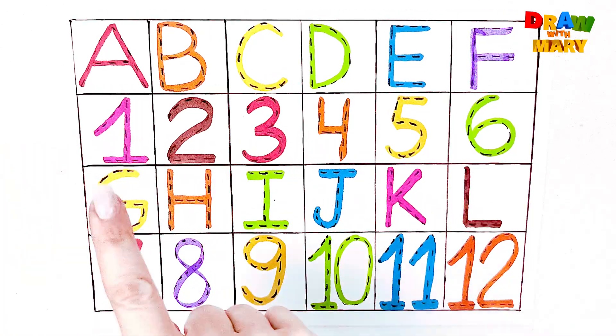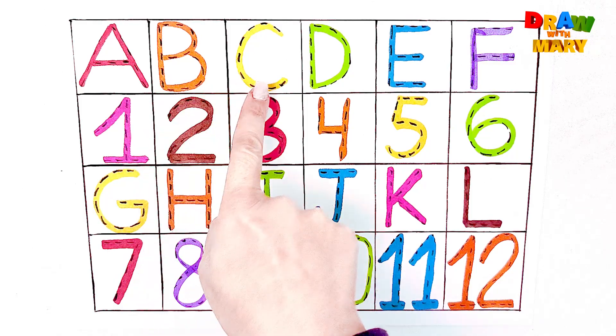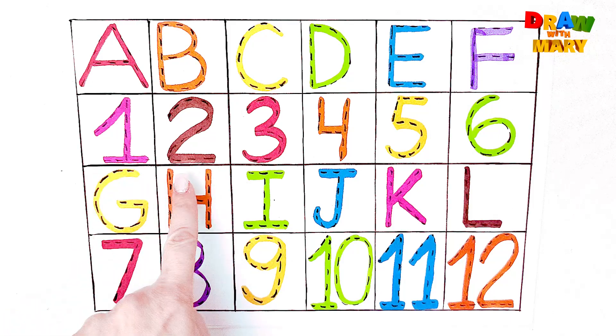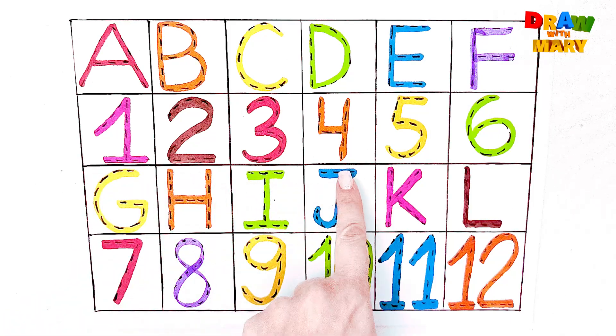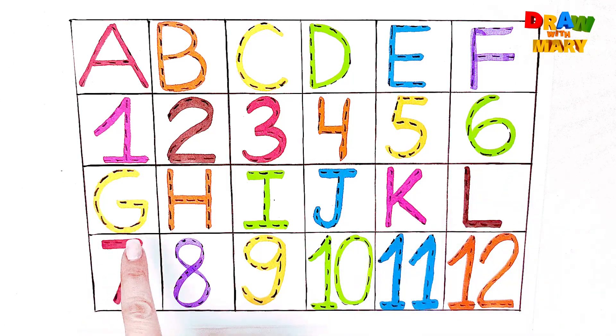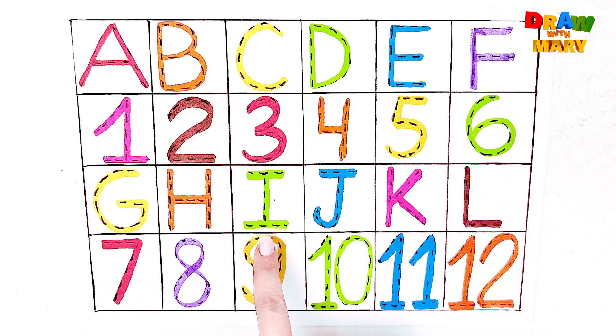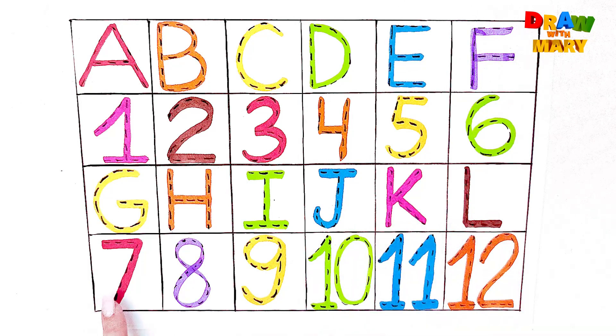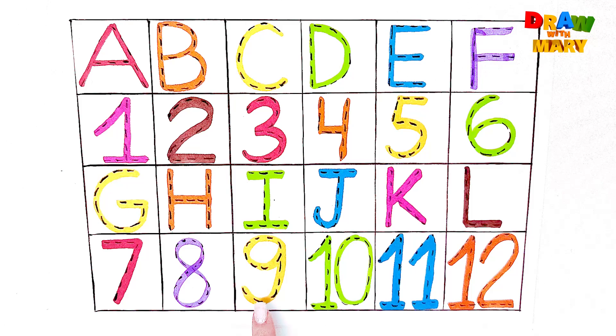A, B, C, D, E, F. One, two, three, four, five, six. G, H, I, J, K, L. Seven, eight, nine, ten, eleven, twelve. Bravo!